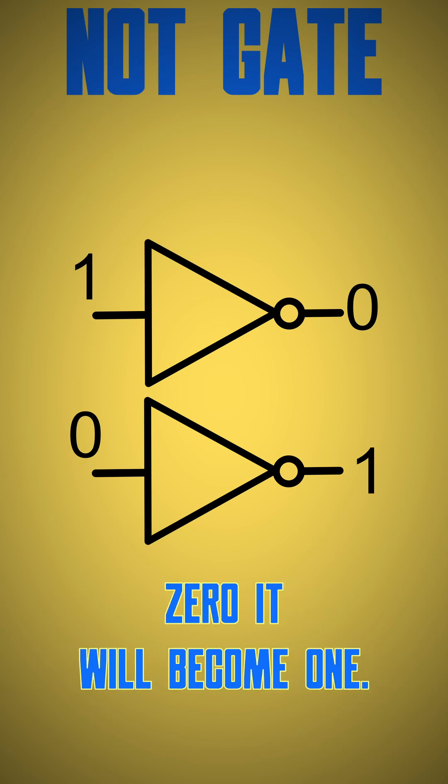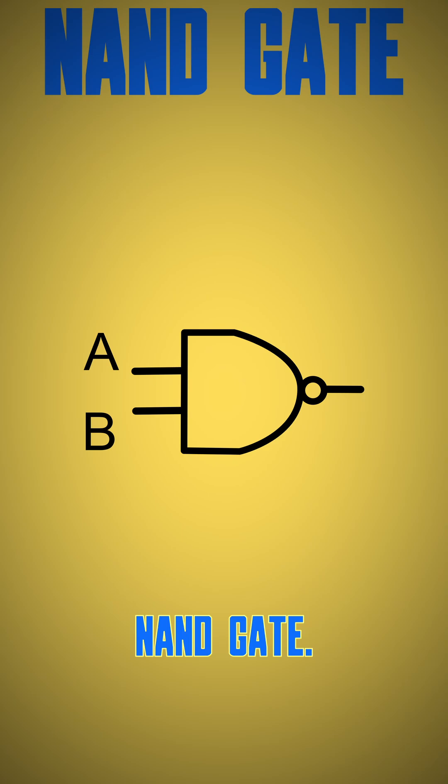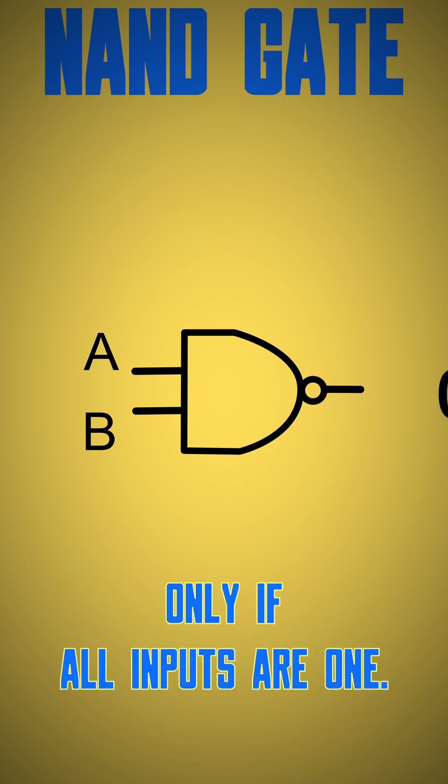NAND gate: outputs become zero only if all inputs are one. This gate logic is the opposite of the AND gate.